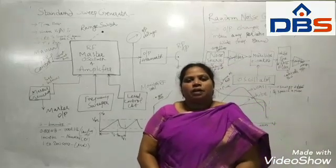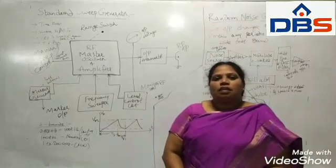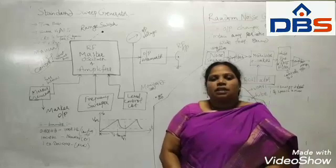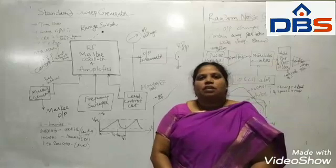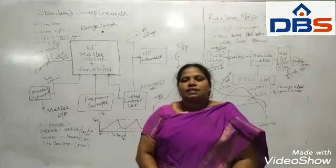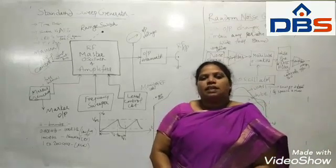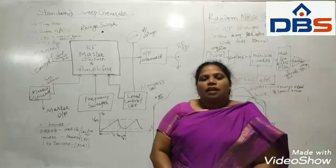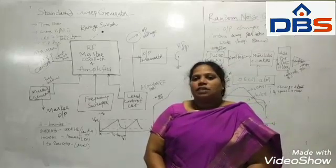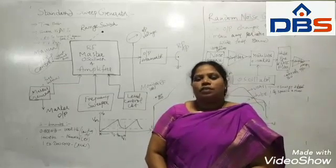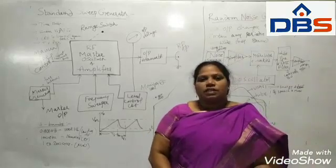Good morning everyone. I am Rajini from DBS IT College. My branch is ECE and my subject is 3rd year 2nd semester electronic measurements and instrumentation. Last class I discussed about the signal generator — what is the basic signal generator and what is the function generator. In the function generator, it will generate different types of waveforms, as we already saw in the last class. Another one is the square and pulse wave generator.